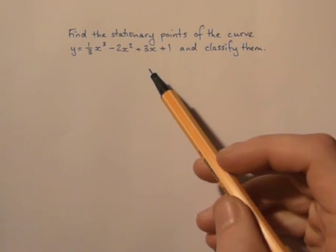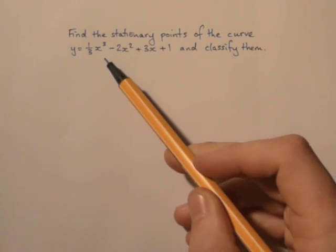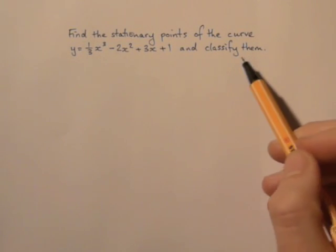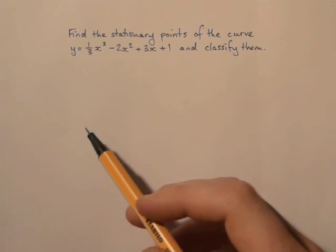This question says, find the stationary points of the curve y equals a third x cubed minus two x squared plus three x plus one, and classify them. Right, so first of all, let's find them.